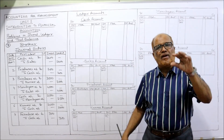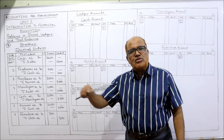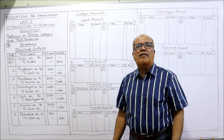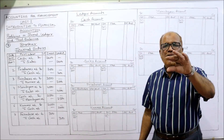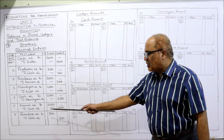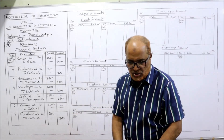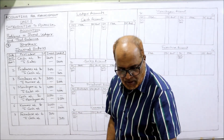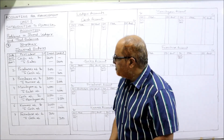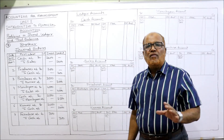Last transaction — furniture purchased for cash. When we purchase furniture, furniture is coming in, so furniture should be debited. Cash is going out, so cash should be credited. Entry: Furniture account Dr. to Cash — 300, being the furniture purchased. That's all — we have completed the journal entries.